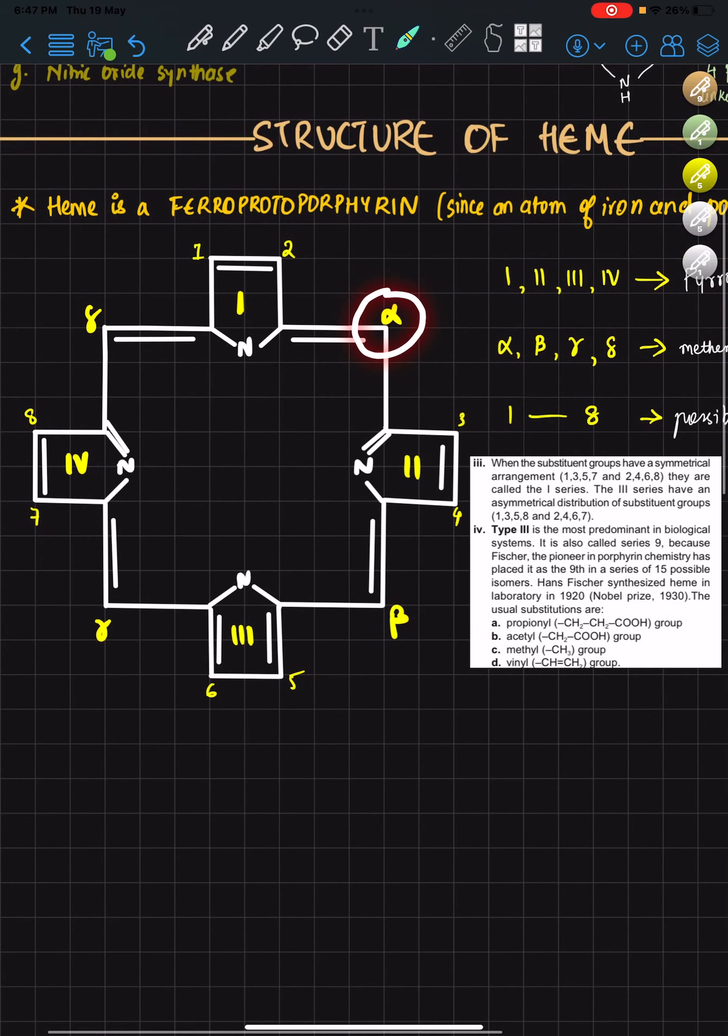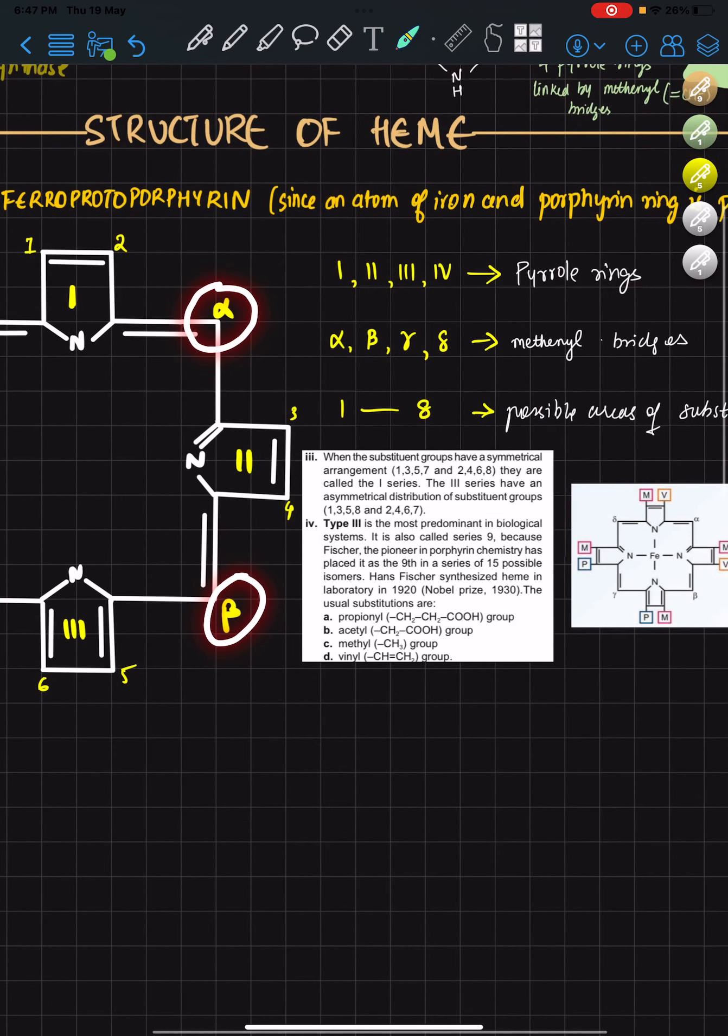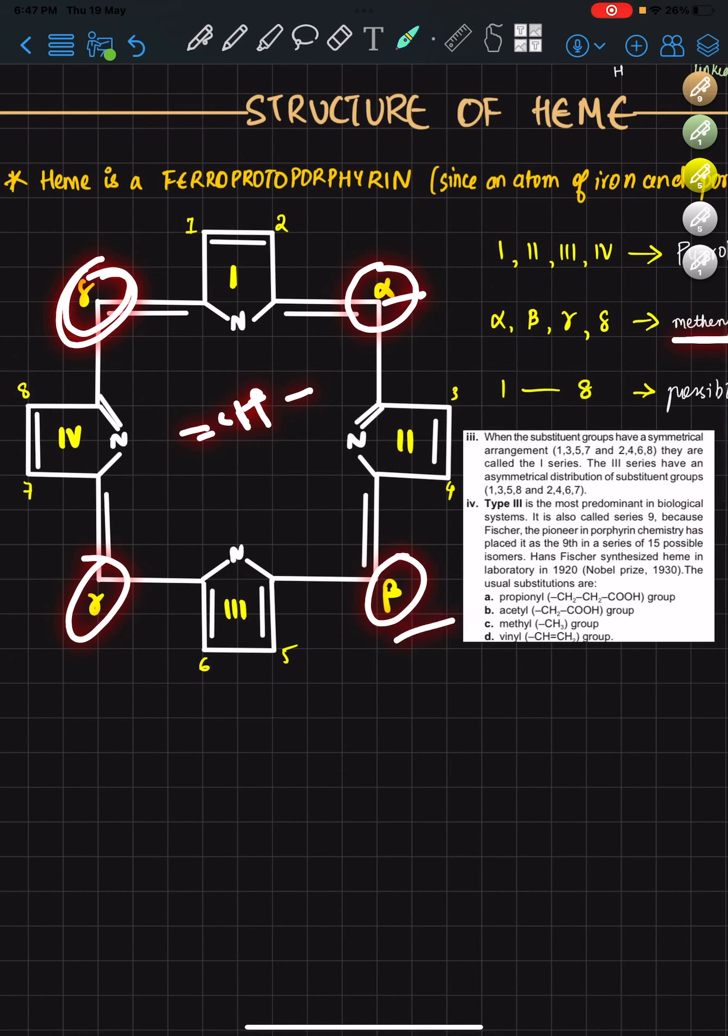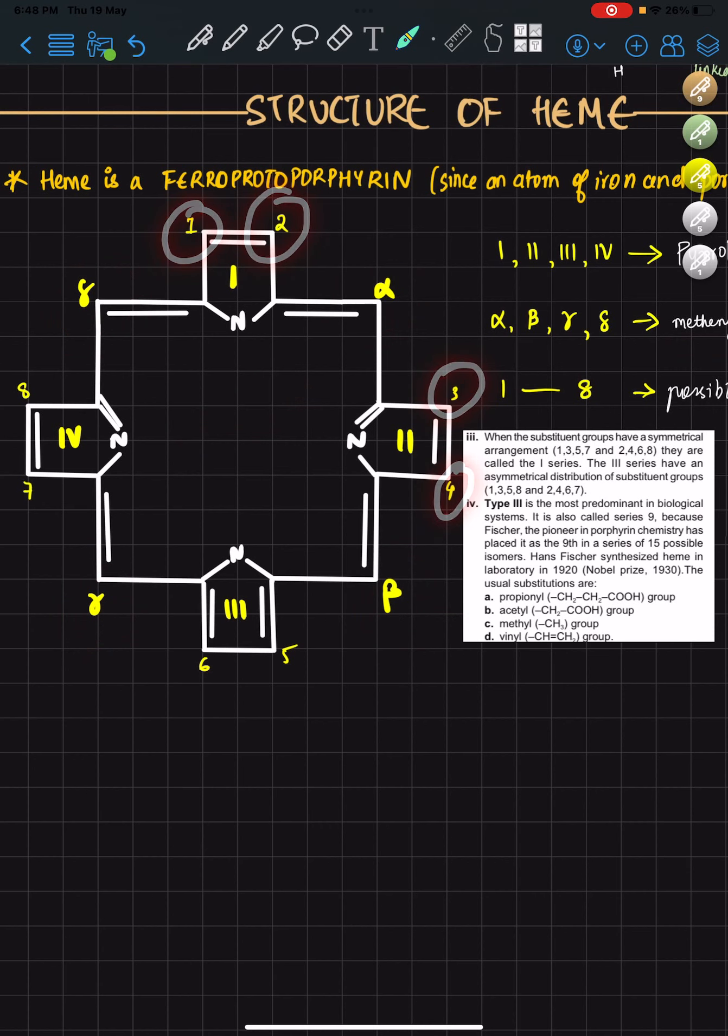And then alpha, beta, gamma, delta—these are the methanol bridges. These methanol bridges are named alpha, beta, gamma, and delta. The third thing is positions one to eight are where substitutions can occur. If they're symmetrical, they will be of the type 1 series; if they're unsymmetrical, they will be of the type 3 series.